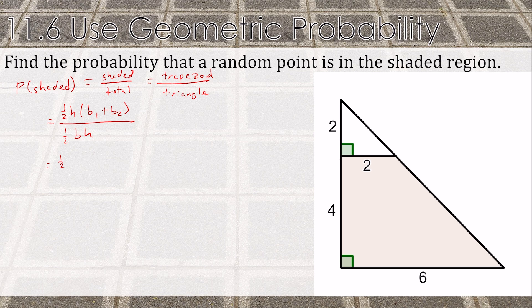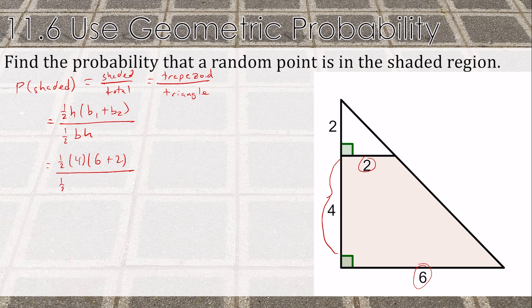For the trapezoid, the height is 4 and its bases are 6 and 2. For the triangle, the base is 6 and the height would be the whole height, which is also 6.